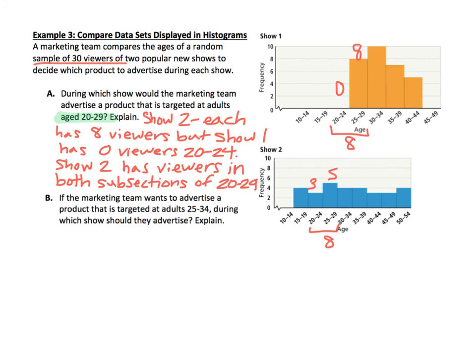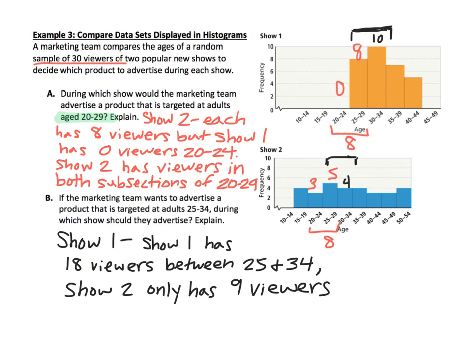Show one is kind of targeted toward those older adults, whereas show two includes all ages from 20 to 29. The last part of the question asks: if the marketing team wants to advertise to 25-to-34-year-old adults, during which show would they advertise? You should have found that show one is better — adding the two brackets of 8 and 10, we get 18 viewers from 25 to 34 in show one, compared to only 9 viewers in that same age bracket for show two. So show one is best to target toward 25-to-34-year-olds.